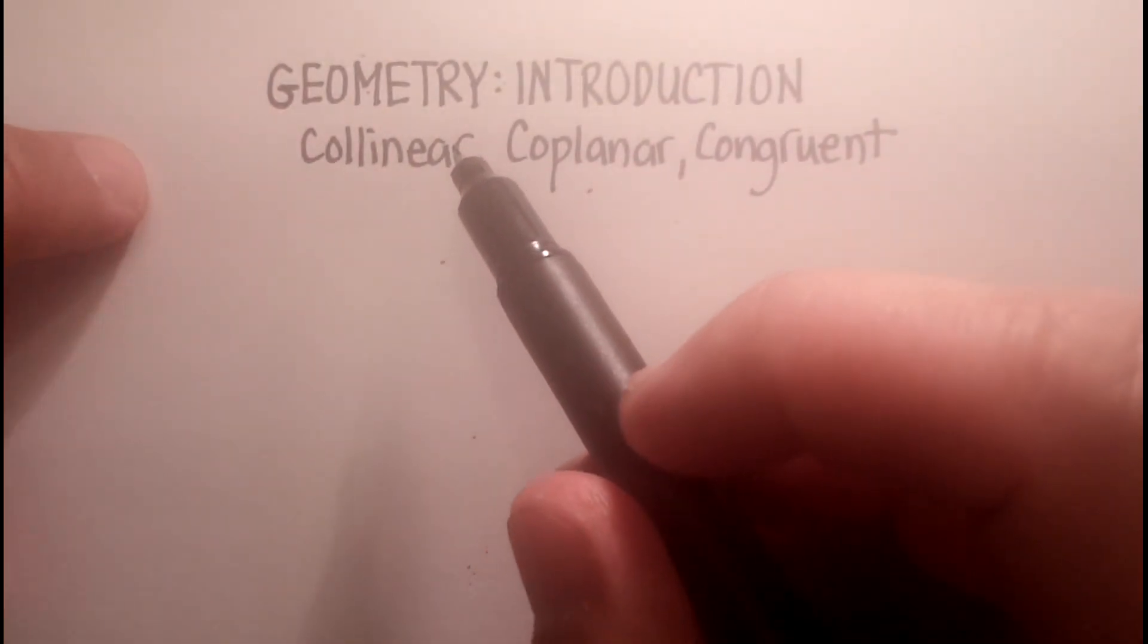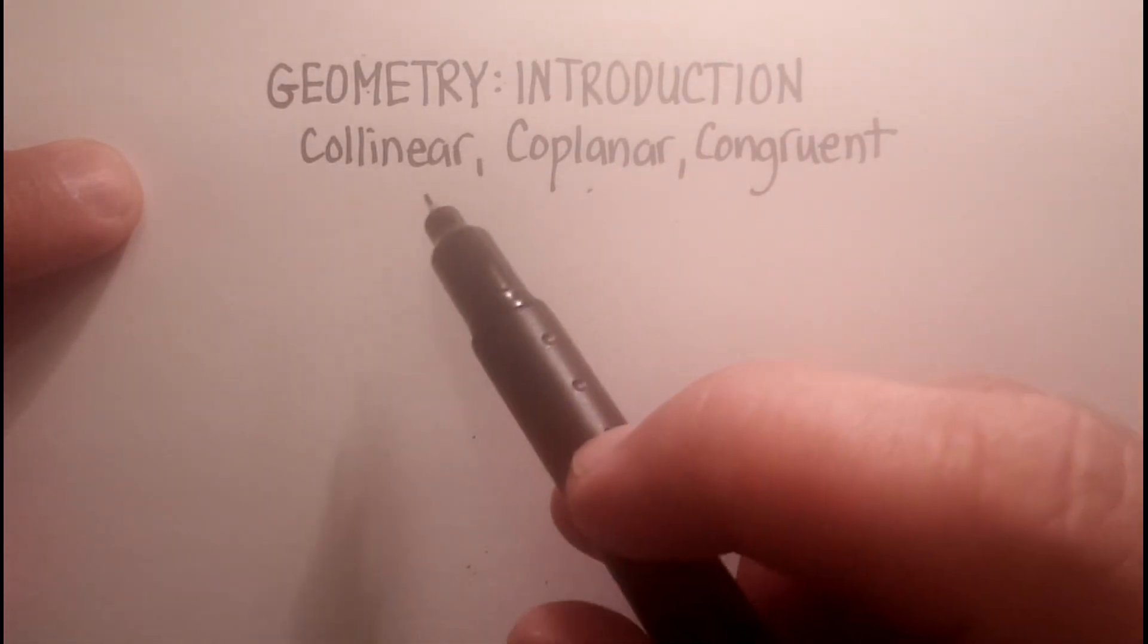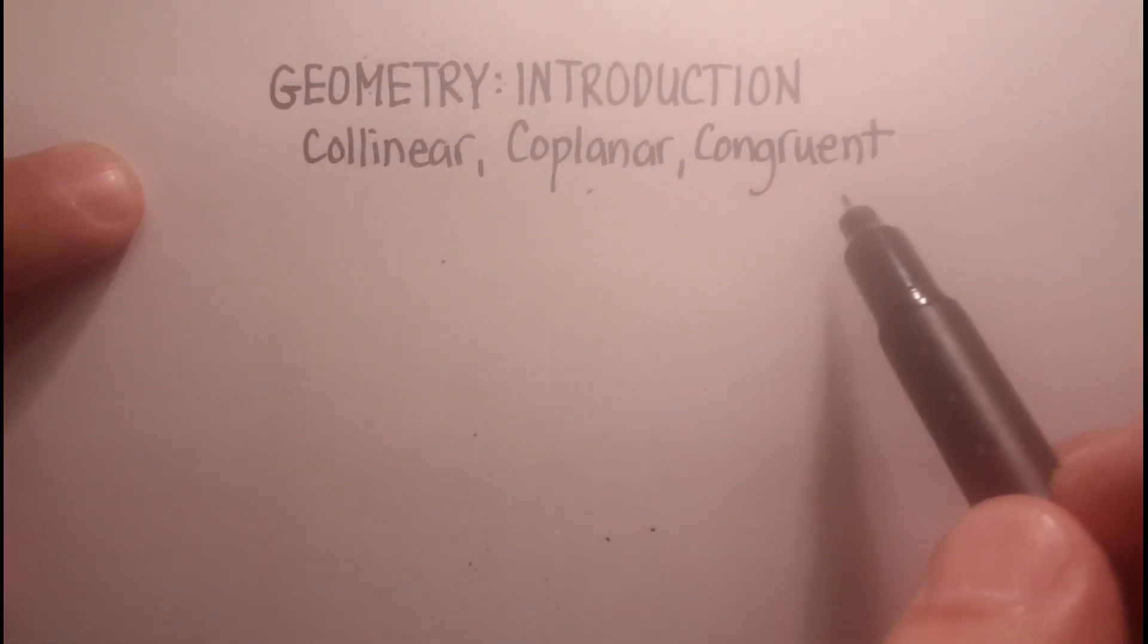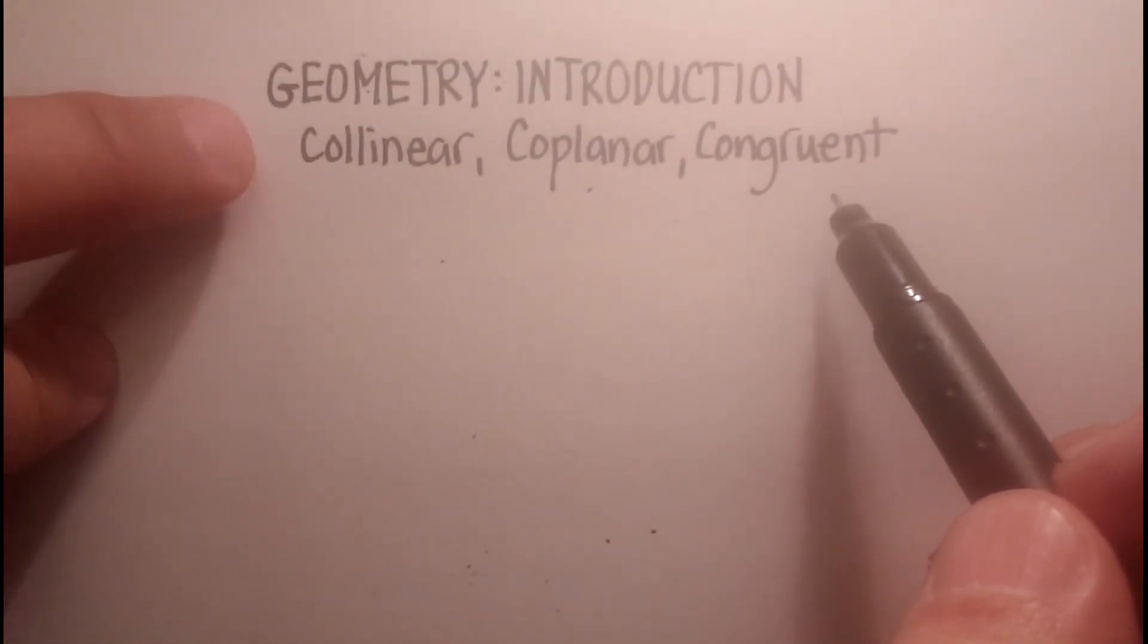Okay, in this video, we're going to talk about three more introductory words or definitions in geometry, and those three words are collinear, coplanar, and congruent. Let's get right into it.